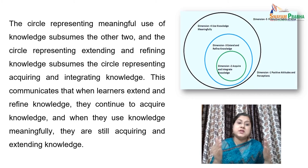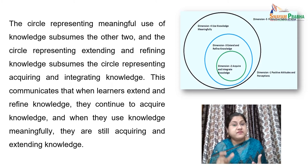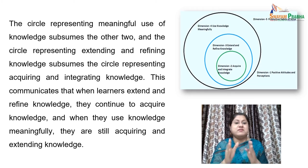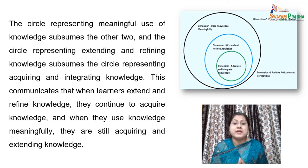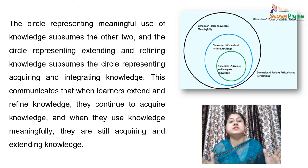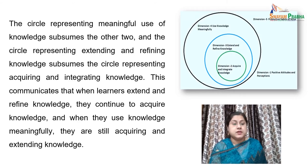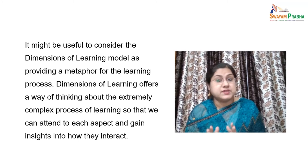The circle representing extending and refining knowledge subsumes the circle representing acquiring and integrating knowledge, as you can see in the diagram. This communicates that when learners extend and refine knowledge, they continue to acquire knowledge, and when they use knowledge meaningfully, they are still acquiring and extending knowledge. The relationships among these circles represent types of thinking that are neither discrete nor sequential — they represent types of thinking that interact and may in fact be occurring simultaneously during the learning process.